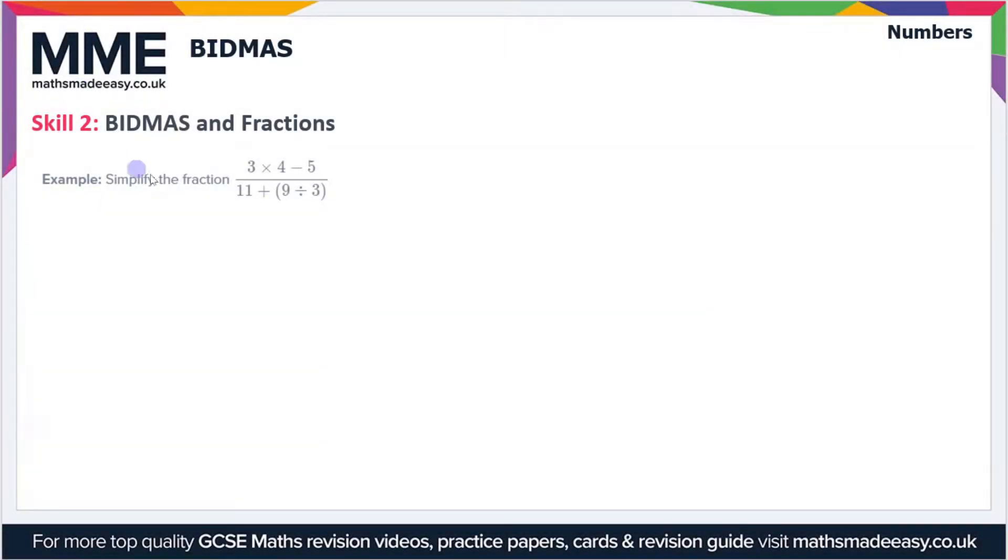There's one other thing we need to know though, and that's when we've got a fraction, we treat the numerator and the denominator separately and then we do the division last. So in this example, we've got 3 × 4 - 5 over 11 + 9 ÷ 3 (in brackets). Treating the numerator and denominator separately, let's just look at the top.